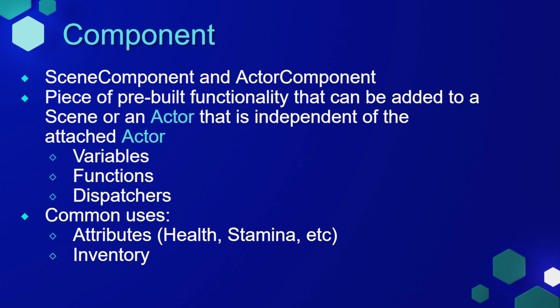Components are broken down into two types: a scene component and an actor component. It's a piece of pre-built functionality that can be added to a scene or an actor that is independent of the attached actor, meaning it can have its own variables, functions, and dispatchers. Common uses are for things where you want a piece of code that can be moved around through various actors — for example, a health component, a stamina component, or an inventory component. You can really use it for anything you want to be able to move among multiple actors.